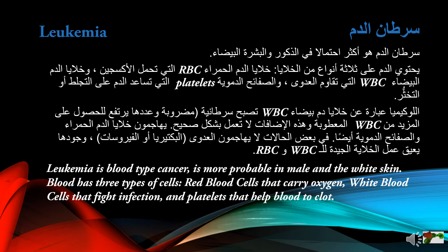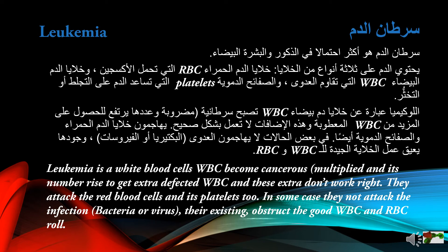Leukemia is a blood type cancer, more probable in males and those with white skin. Blood has three types of cells: red blood cells that carry oxygen, white blood cells that fight infection, and platelets. In leukemia, white blood cells become cancerous, multiply, and their numbers rise, producing extra defective white blood cells that don't work right. They attack the red blood cells and platelets too, and in some cases do not fight infection, bacteria, or viruses. Their existence obstructs the role of healthy white and red blood cells.